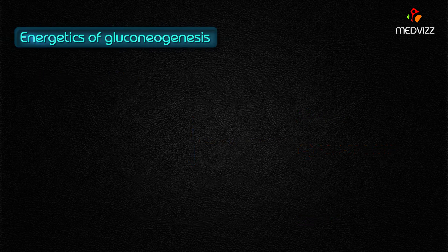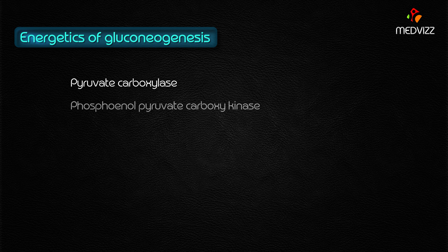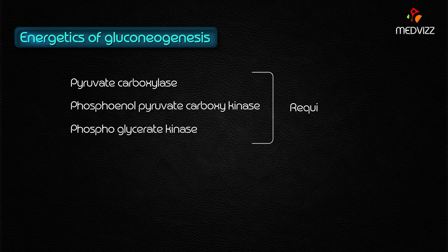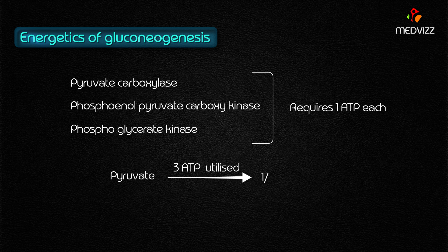Regarding the energetics of gluconeogenesis: the reactions catalyzed by pyruvate carboxylase, phosphoenolpyruvate carboxykinase, and phosphoglycerate kinase each require one ATP. Therefore, three ATPs are utilized per pyruvate residue to produce one half molecule of glucose, meaning six ATPs are required to generate one glucose molecule.